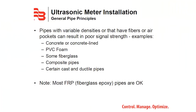Pipes with variable densities or that have fibers or air pockets can result in poor signal strength. Examples include concrete or concrete-lined PVC, foam, some fiberglass composite pipes, and certain cast and ductile pipes. Note: most FRP pipes are okay.